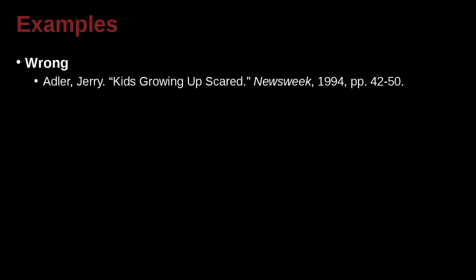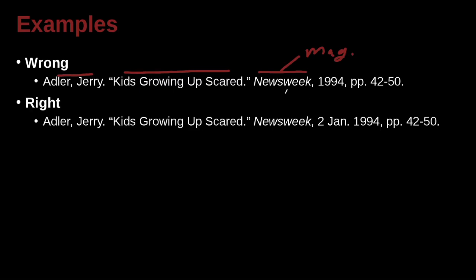Adler, Jerry — 'Kids Growing Up Scared,' Newsweek, 1994, pages 42 to 50. This looks straightforward — single author, article name, and what seems like a journal. But this is actually a magazine, not a journal. The difference is that magazines usually come out weekly, so you need to add a very specific date — the day, the month, and the year — because the issue is based on the day of the week.